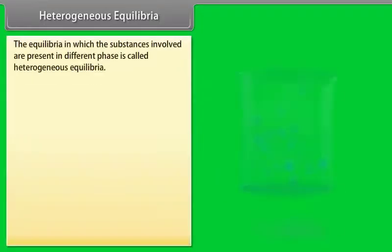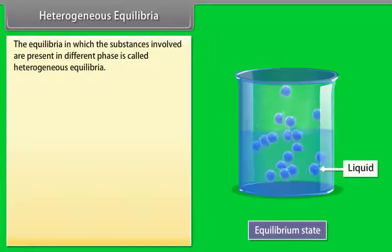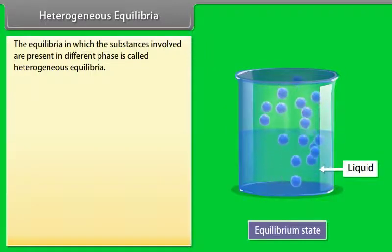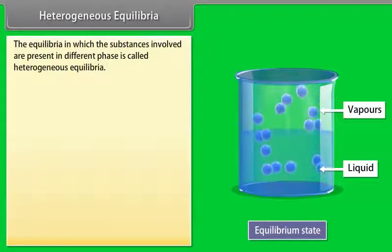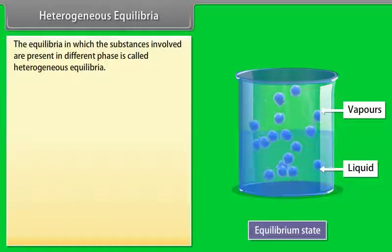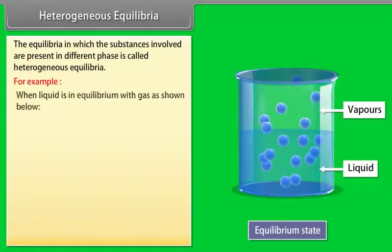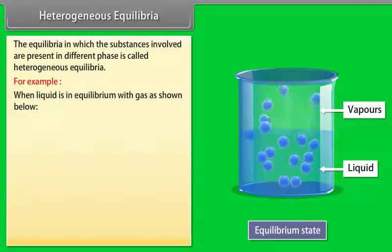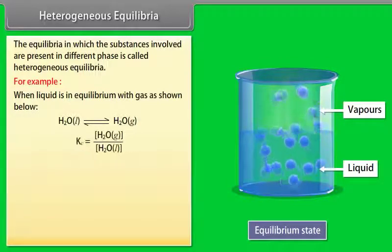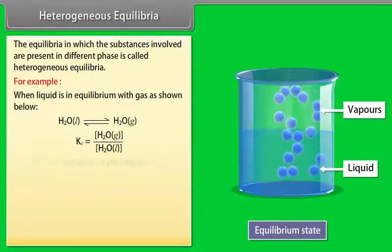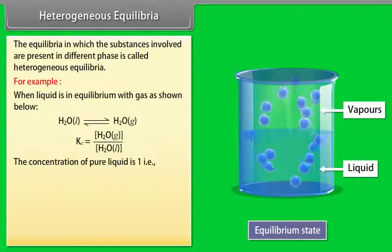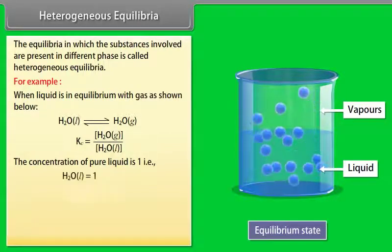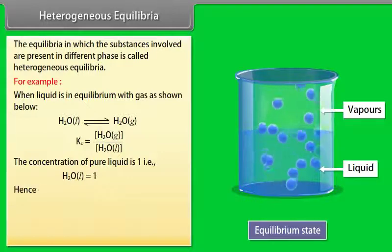Heterogeneous Equilibria. The equilibria in which the substances involved are present in different phases are called heterogeneous equilibria. For example, when liquid is in equilibrium with gas, the equilibrium constant expression is simplified because the concentration of pure liquid is taken as 1 — that is, H₂O in liquid form equals 1.